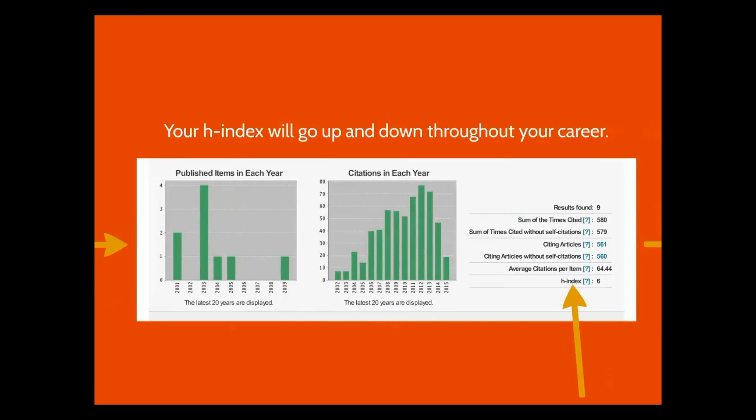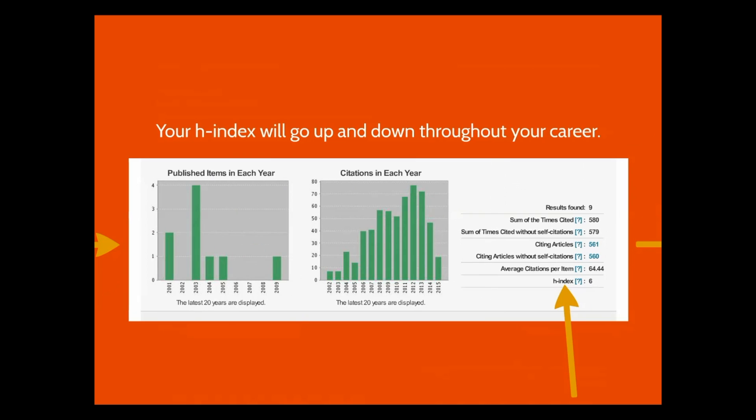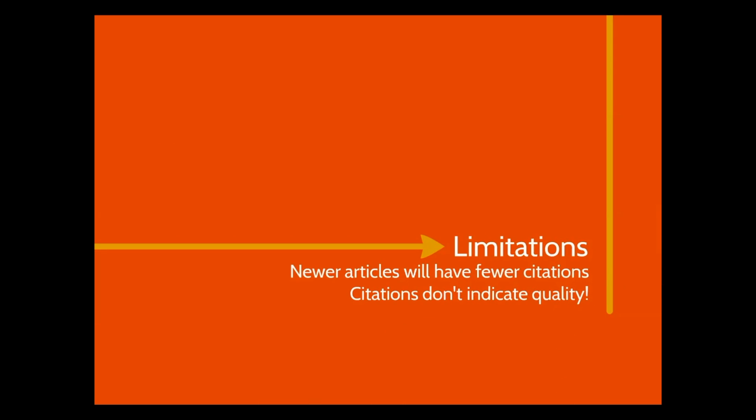Here's an example of an h-index. Your h-index will change over time as you publish more articles and receive more citations. Citations accumulate over time, so newer articles won't have received as many or any citations yet.